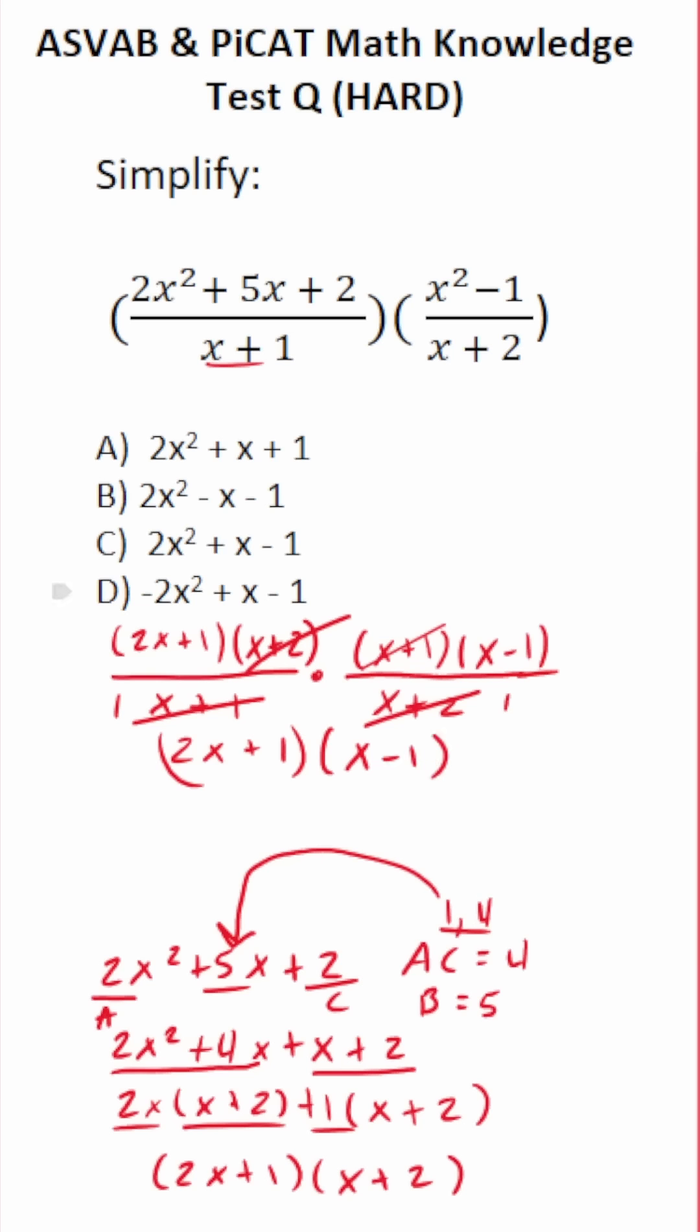In order to have it match one of these answer choices, we have to multiply it out using the FOIL method. So we're going to multiply 2x here and here, and we're going to multiply 1 here and here. And let's do that very quickly.